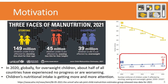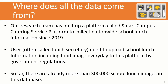According to statistics from WHO in 2021, there are 39 million overweight children worldwide, and the trend continues to increase. How to record children's nutritional intake in an intelligent way has become a hard research topic. The quickest and most intuitive way is to save food records through photo identification. Our research team has built up a platform called Smart Campus Catering Service Platform to collect nationwide school lunch information since 2019.